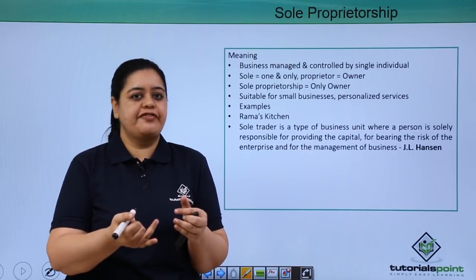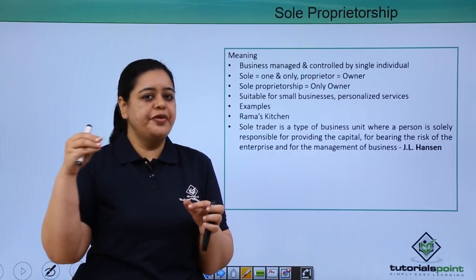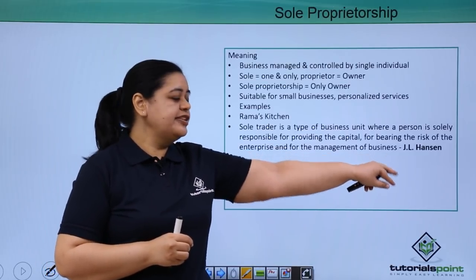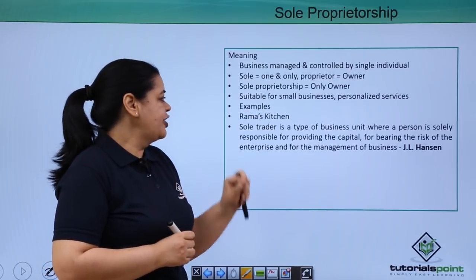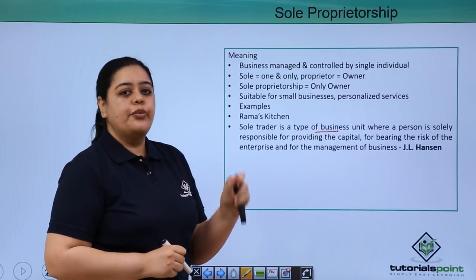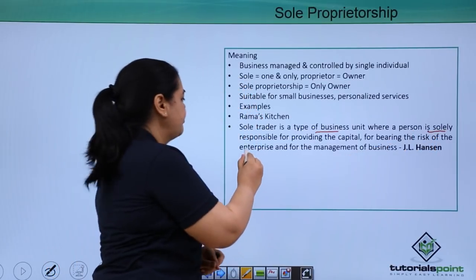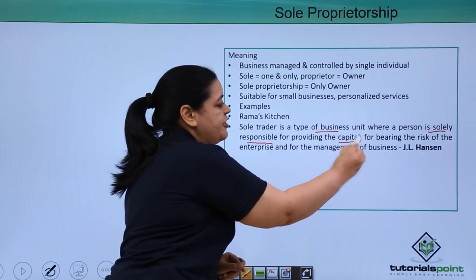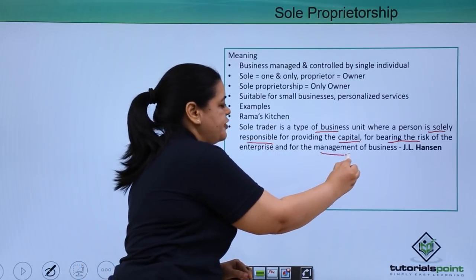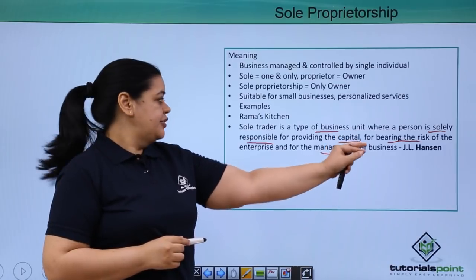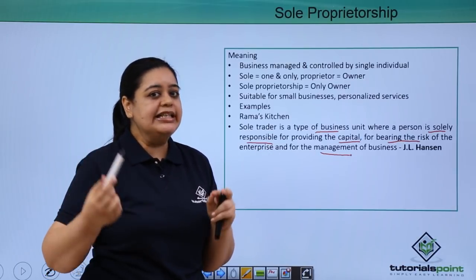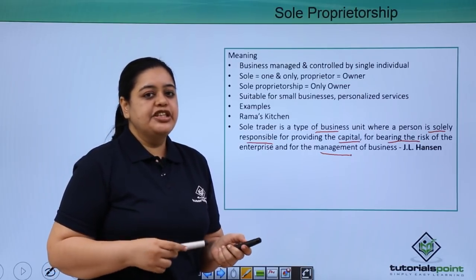The best way to remember a definition is to remember the few important words; the rest of the words will fit in. The first definition is by J.L. Hansen. He says: a sole trader is a type of business unit where a person is solely responsible for providing the capital, bearing the risk of the enterprise, and for the management of the business. Remember the key words: type of business unit, solely responsible, capital, bearing the risk, and management of business.